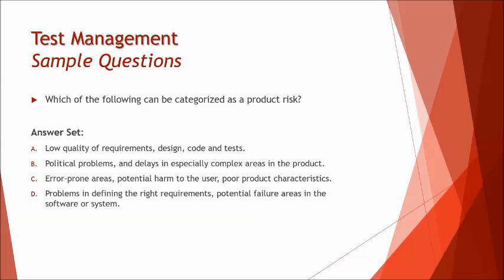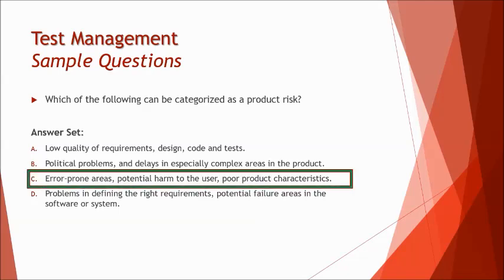Option D — problems in defining the right requirement and potential failure areas in the software — has 'problems in defining the right requirement' which goes to project risk. So the right answer is C, which is straightforward from the product risk definition.